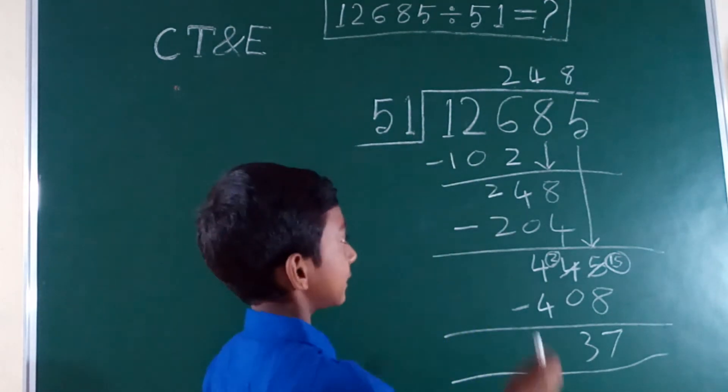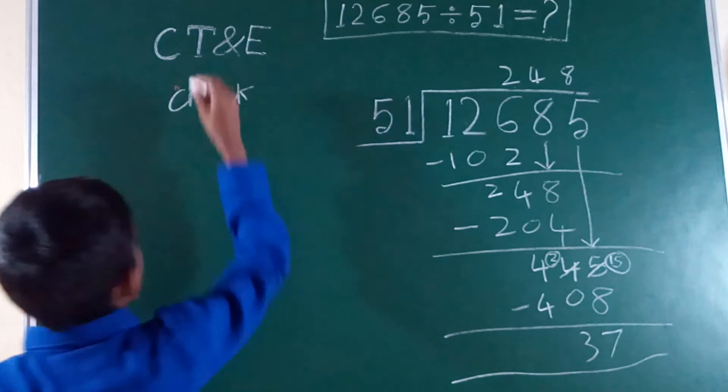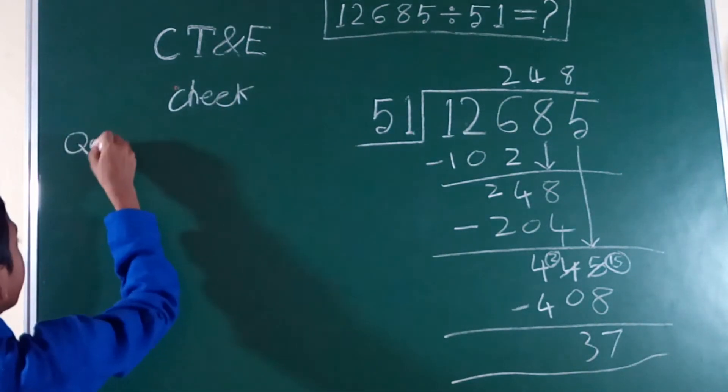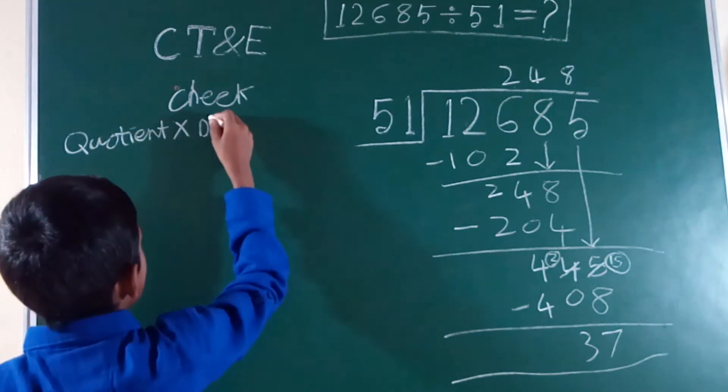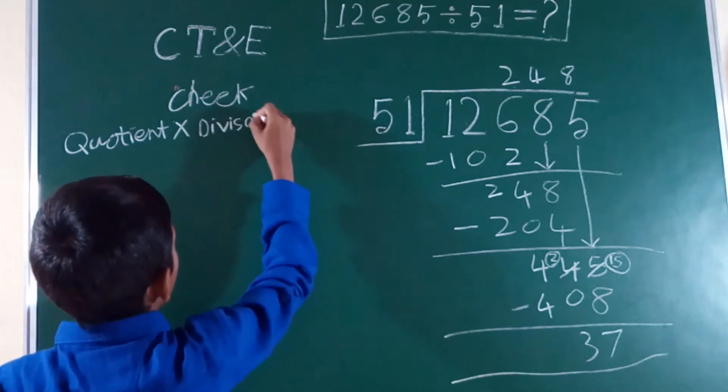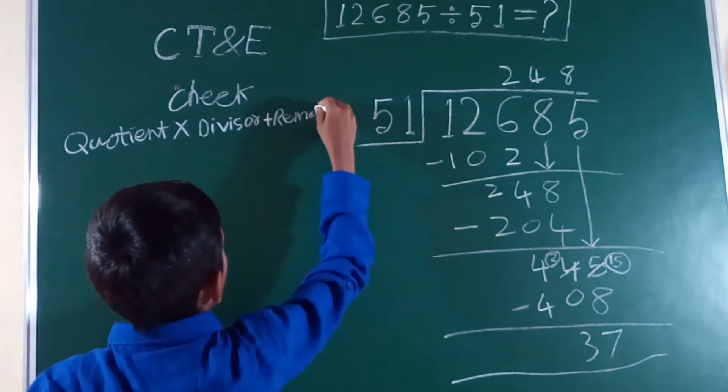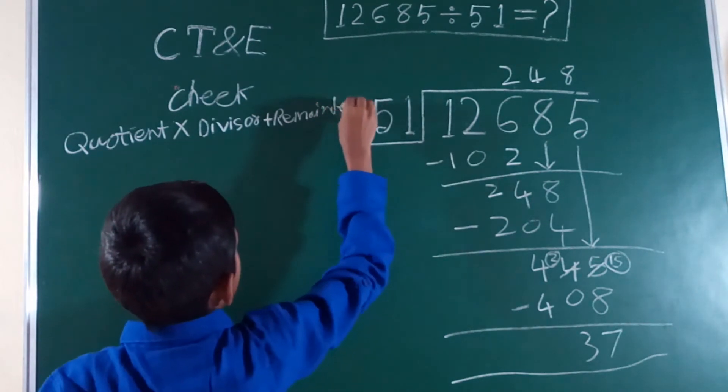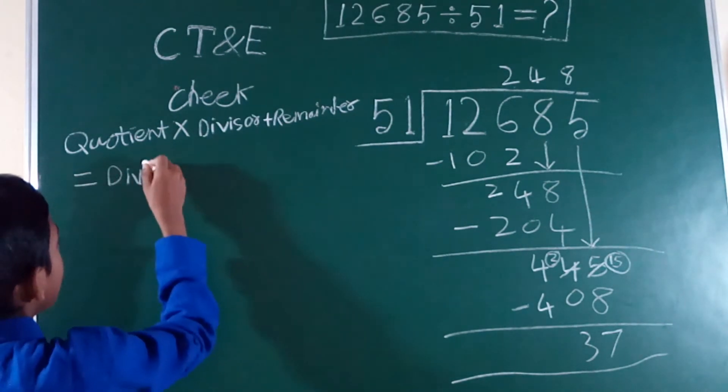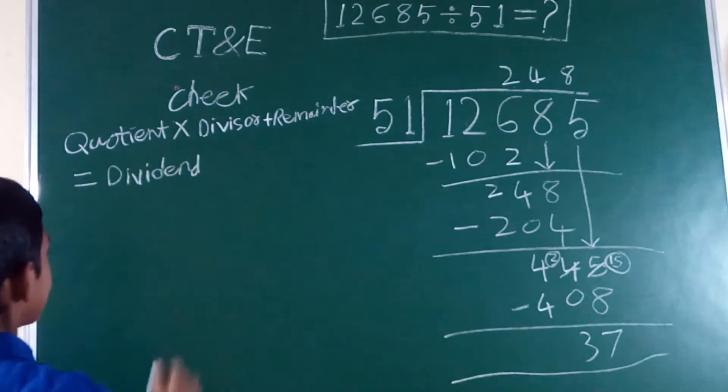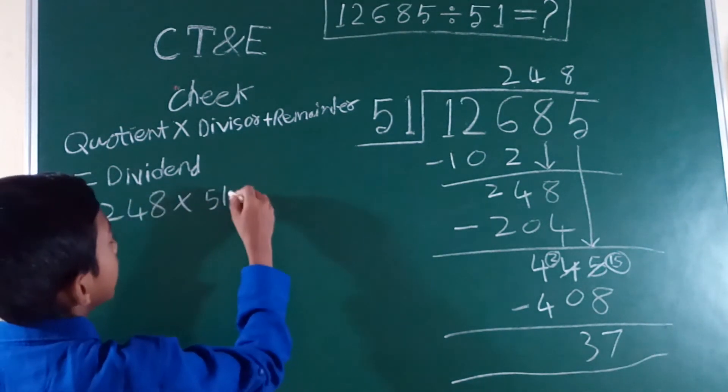Now we have to check if the division is right or wrong. Check: quotient multiply divisor plus remainder equals dividend. Let's check: 248 multiply 51 plus 37.